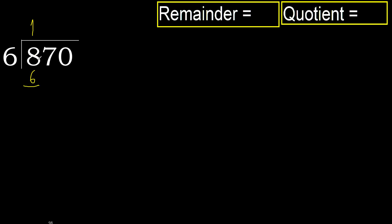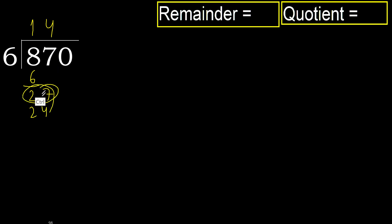Ok, subtract. Next: 27. 6 multiplied by 5 is 30 — 30 is greater. Multiplied by 4 is 24 — 24 is not greater. Ok, subtract.